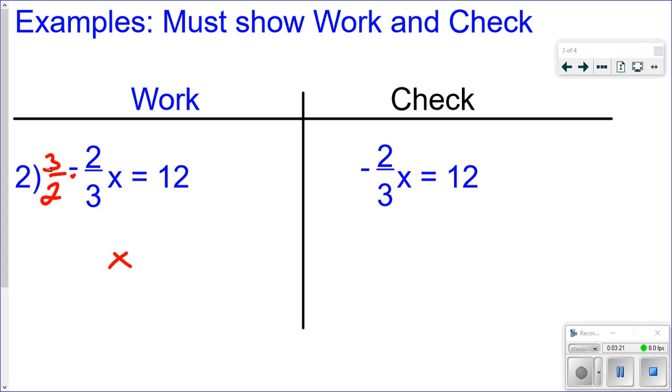So when you multiply that, you're going to get 6 over 6, which is just 1. So that canceled this out, essentially, because 1x is the same thing as x. Whatever I do to one side of the equation, I have to do the same thing to the other side. So I'm going to multiply this side by negative 3 halves. I just put the 12 over 1.